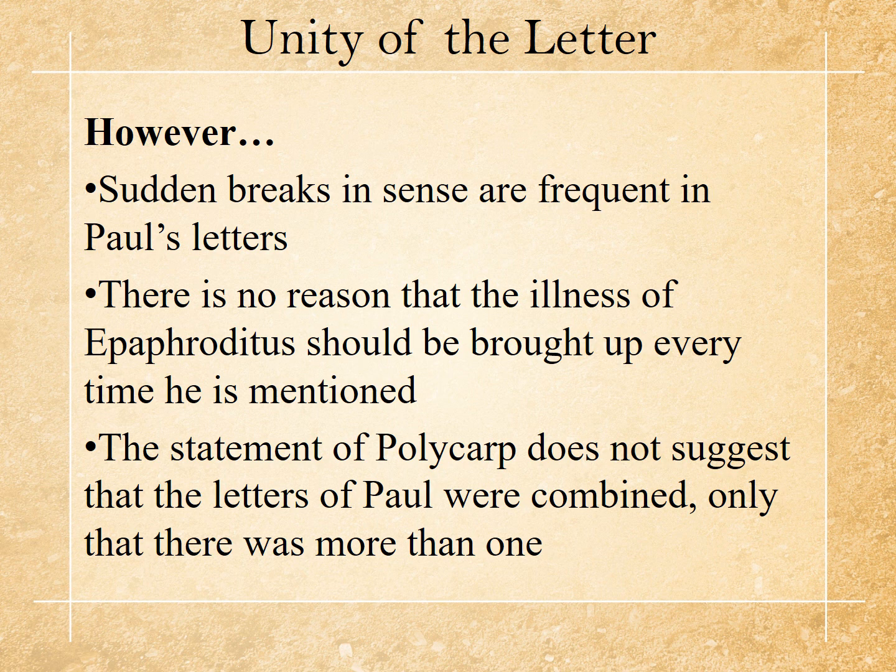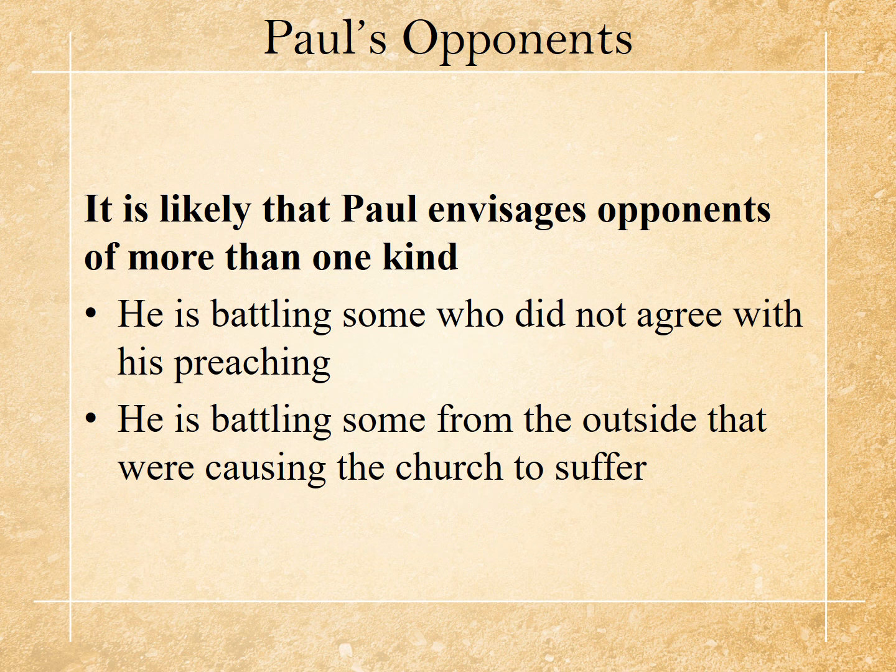However, Carson and Moo argue against those items and say that there is unity of the letter. Sudden breaks in sense are frequent in Paul's letters. There's no reason that the illness of Epaphroditus should be brought up every time he's mentioned. The statement of Polycarp does not suggest that letters of Paul were combined, only that there was more than one. We know he mentioned other letters in Corinth — in 1 Corinthians he mentions a previous letter we don't have. That's no reason to say 1 Corinthians has to be chopped up. It's likely that Paul envisages opponents of more than one kind in this letter — battling some who don't agree with his preaching and others from outside causing the church to suffer.